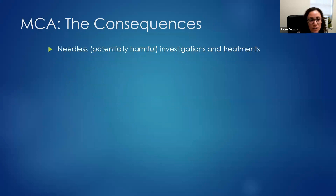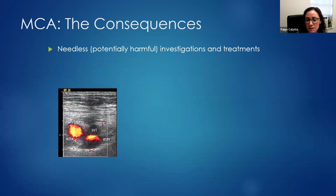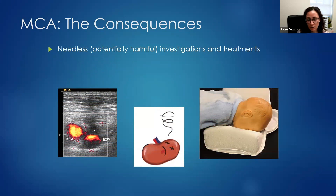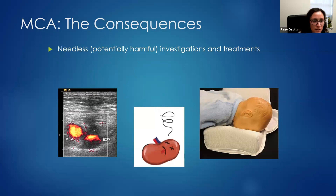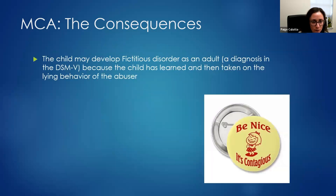The consequences of medical child abuse include needless procedures, lab work, imaging studies, and surgeries — interventions not needed by the child that put them at further risk. It can also result in a genuine medical condition, such as the DVT mentioned in the case. Death is also possible — it may not be the caregiver's intended consequence, but especially in younger children, there is a high risk of death when symptoms are induced. Children may also develop their own sense of invalidism, be unable to attend school, and develop mental health conditions including fictitious disorder.